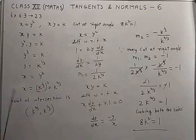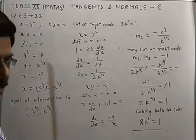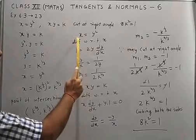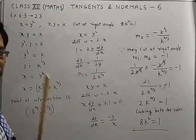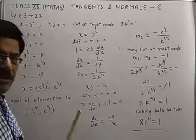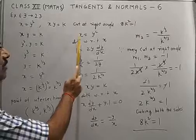This is point of intersection, first step. Now first curve is x = y² and you have to find slope of tangent of first curve and second curve. For that you have to differentiate.